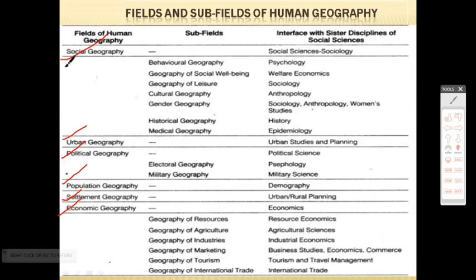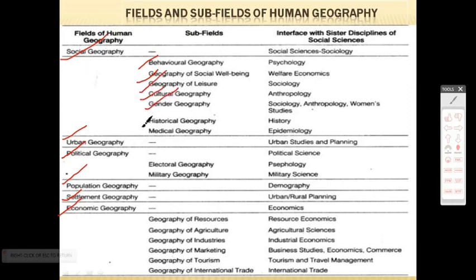Social Geography can be further subdivided into various sub-fields: Behavioral Geography, Geography of Social Wellbeing, Geography of Leisure, Cultural Geography, Gender Geography, Historical Geography, and Medical Geography.